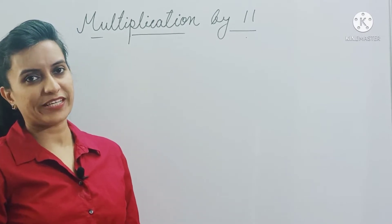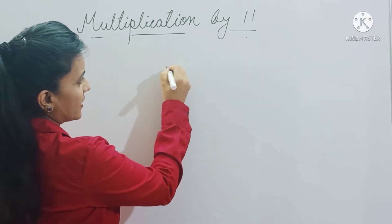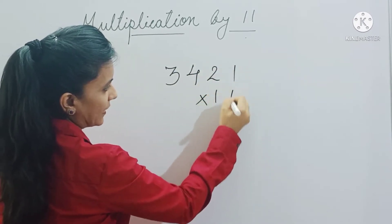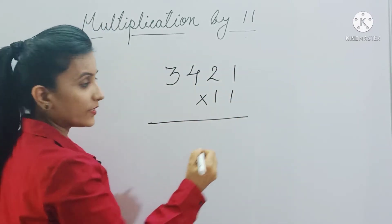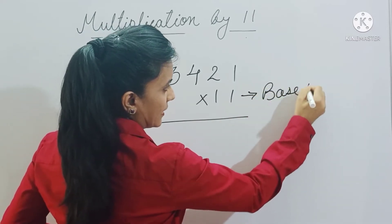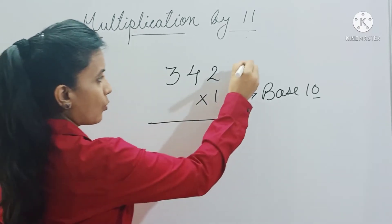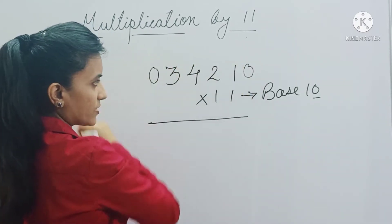Let's take 3421 multiplied by 11. Now we know that the base of 11 is 10, and 10 has one zero, so you have to place one zero on both ends of this number.